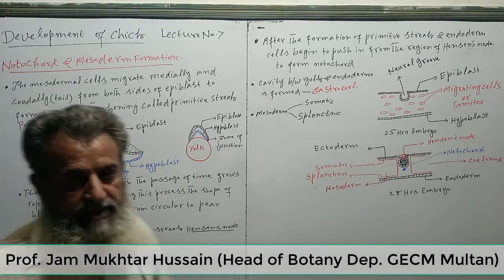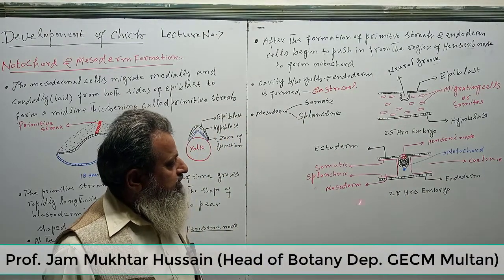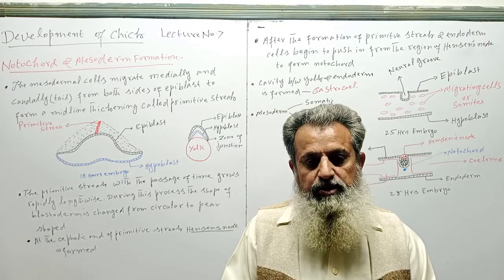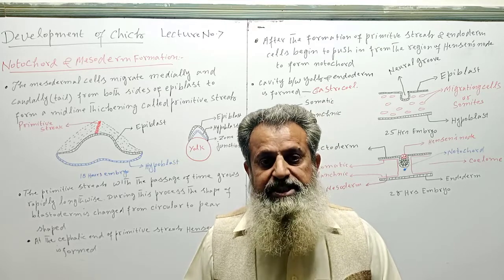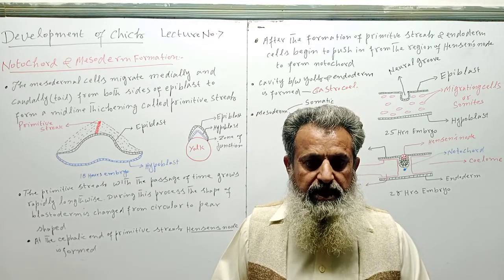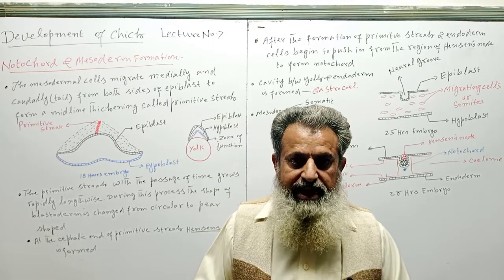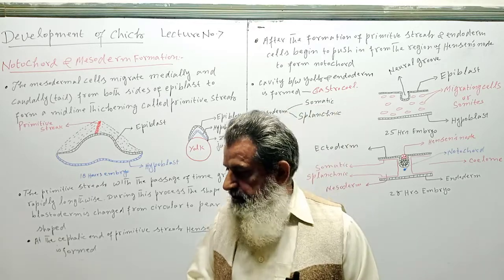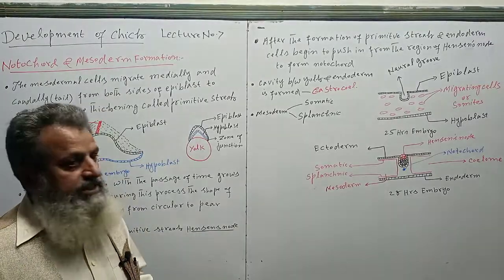You can see that this is an 18-hour embryo, this is a 25-hour embryo, and this is a 28-hour embryo. In the developing structure, the first step is fertilization, then laying of the egg, then incubation at a suitable temperature of 36 to 38 degrees. After that comes cleavage, then blastulation, and then gastrulation. Next time we will discuss the neurulation process.